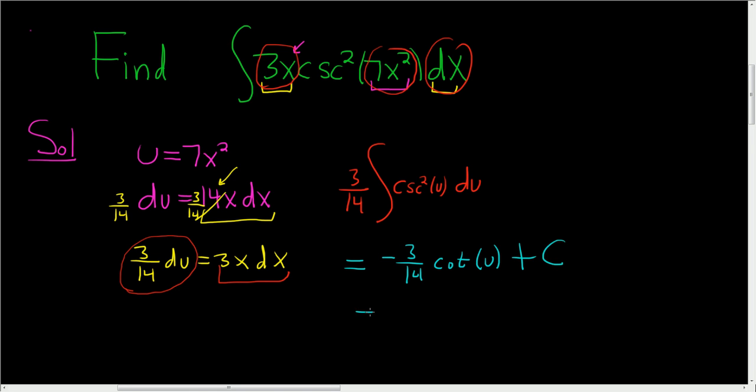u was 7x squared, so this is negative 3 over 14 cotangent of 7x squared plus our constant c. And that's the final answer.